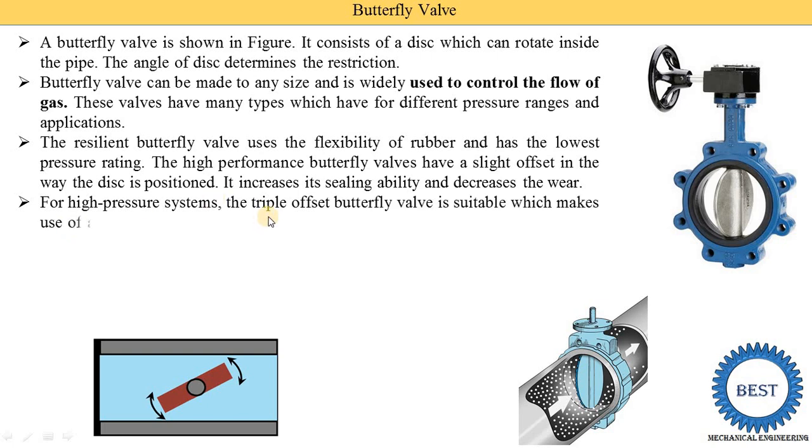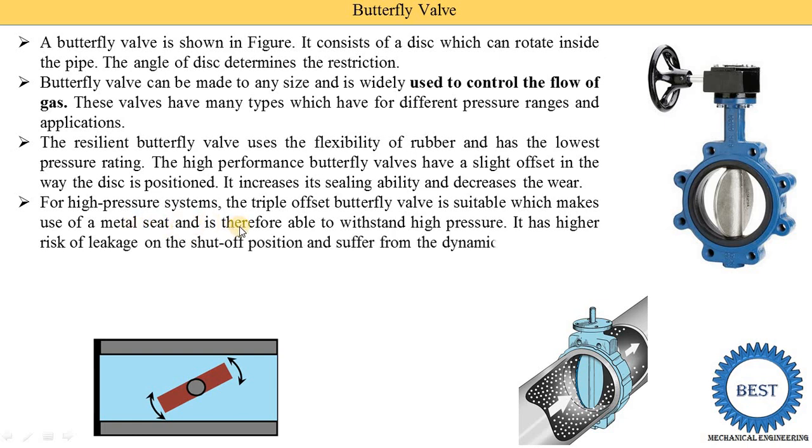For higher pressure system the triple offset butterfly valve is suitable which makes use of metal seat and is therefore able to withstand the higher pressure. Suppose we use for the higher pressure gas. At that time, this seal is not made from the rubber but it is made from the metals.